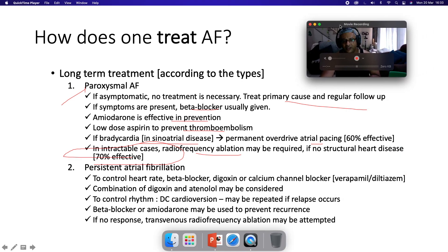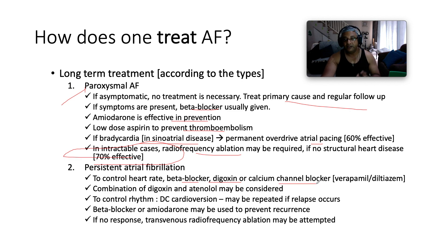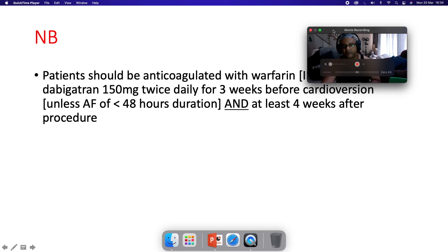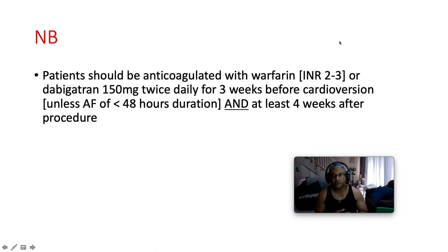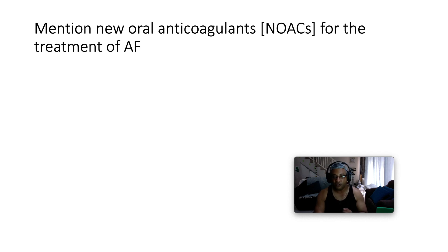If it's persistent atrial fibrillation, to control the heart rate you can give a beta blocker, digoxin if there's concomitant heart failure, or a calcium channel blocker — verapamil or diltiazem. A combination of digoxin and atenolol may be considered. For rhythm control, DC cardioversion may be used, repeated if relapse occurs. Beta blocker or amiodarone may be used to prevent recurrence. If there's no response, radiofrequency ablation. Importantly, patients should be anticoagulated with warfarin to a therapeutic INR of 2 to 3, or one of the NOACs such as dabigatran 150 mg twice daily, for 3 weeks before cardioversion unless AF duration is below 48 hours, and also 4 weeks post DC cardioversion.